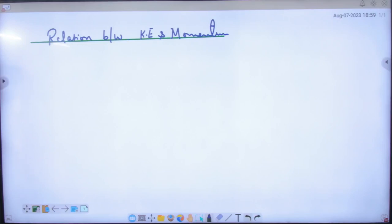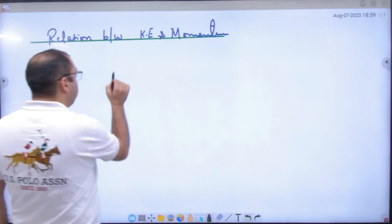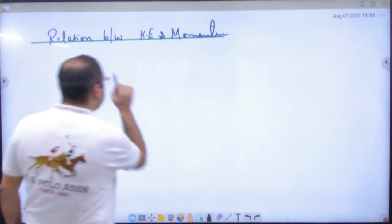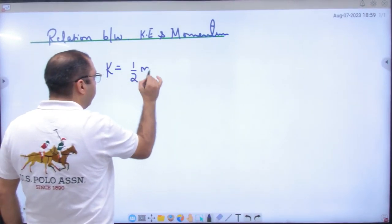Relation between kinetic energy and momentum. So what did we do? The kinetic energy formula is half mv squared.